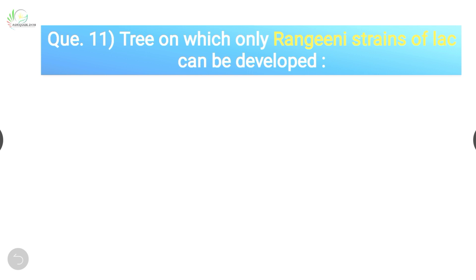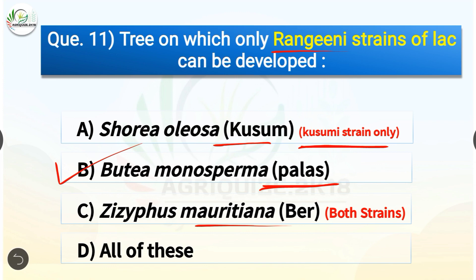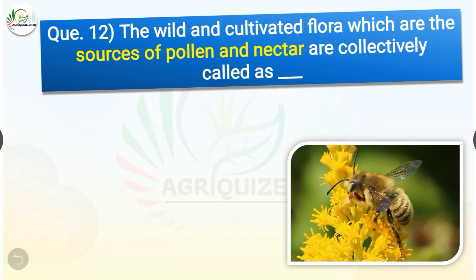Question number eleven: On which tree can only the Rangeeni strain of lac be developed? The options are: Shorea oleosa kusum, Butea monosperma (palas), Ziziphus mauritiana ber, or all of these. The correct answer is option B — Butea monosperma (palas). The Rangeeni strain of lac can only be developed on Butea monosperma. The Kusumi strain can only be developed on Shorea oleosa kusum, and on Ziziphus mauritiana both strains of lac can be developed.